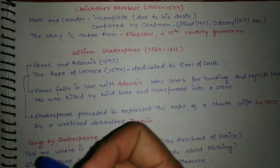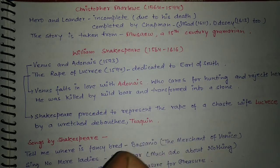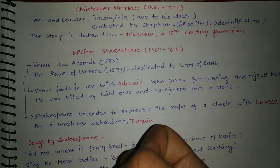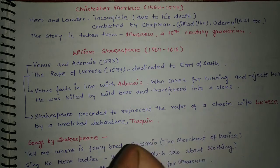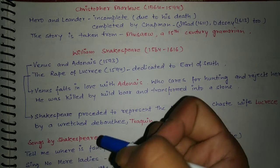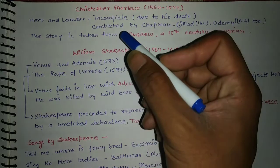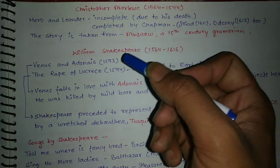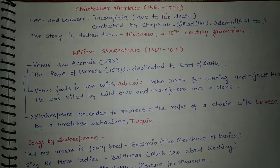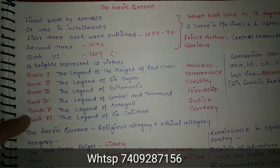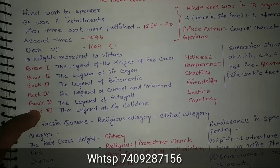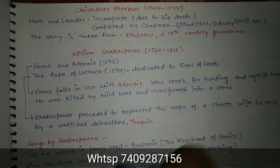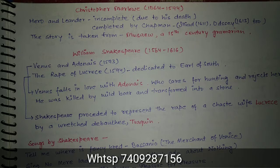Hello everyone, welcome again to my channel. We are doing history of English literature on this channel and I have completed 15 videos, so if you have not watched those videos you can check them out. Today we are doing Christopher Marlowe. Before that, I created a very important video on the Fairy Queen — all the notes you can find there. If you want to buy written notes from Chaucer to the modern period, you can message me on WhatsApp and I will send you the PDF.